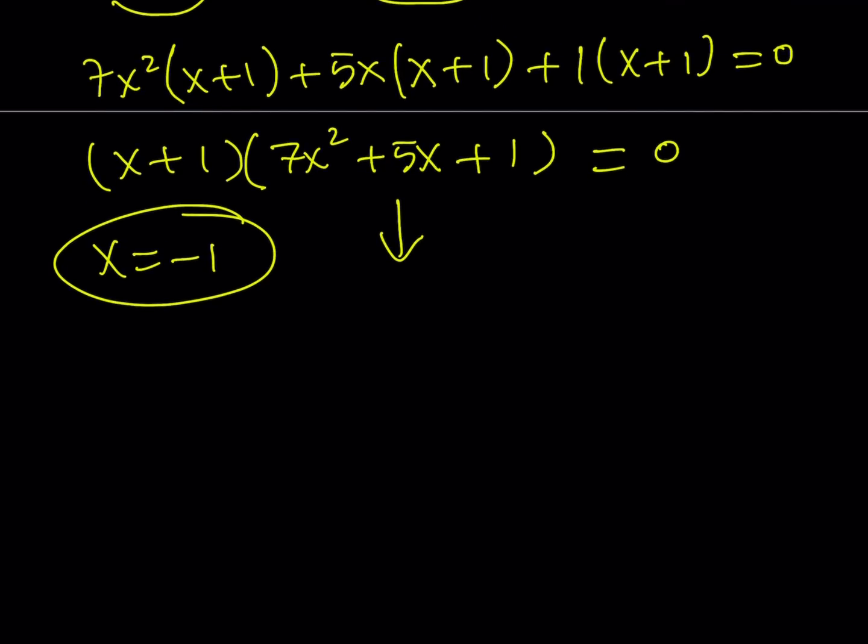How about the quadratic? We can solve it using the quadratic formula. And the quadratic formula tells us that x equals negative b plus minus the square root of b squared, which is 25, minus 4ac. 4 times 7 is 28. Minus 28. Uh-oh. We got a negative answer. Divided by 2a, which is 14. Awesome.